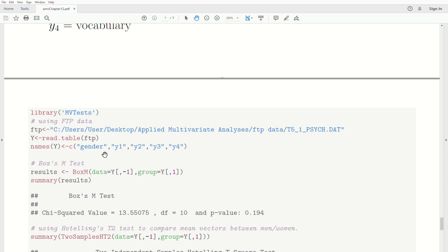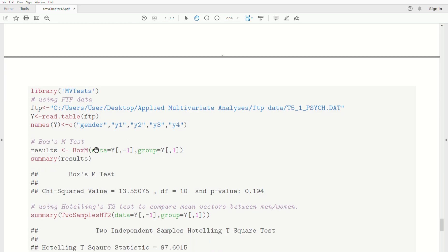So the data is all the data but the first column. That's what this represents. And then group is the first column. And that's it. We conduct the test. It pumps out a value.